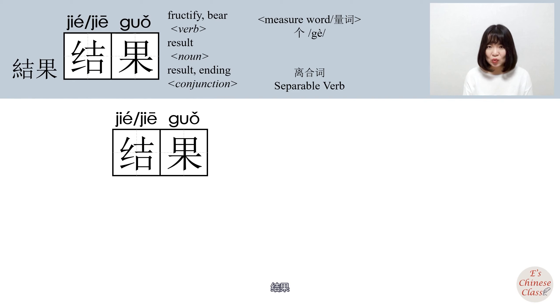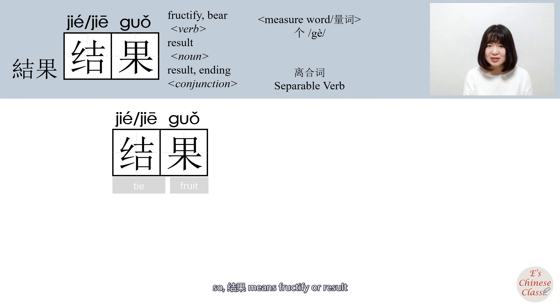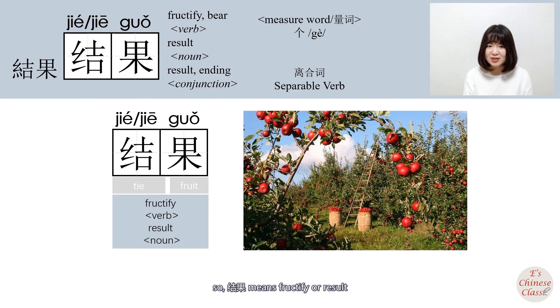结果: 结 means knot/tie, 果 means fruit. So 结果 means to fructify or result.